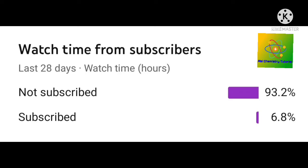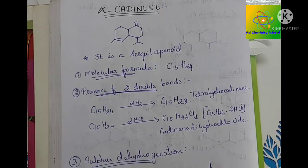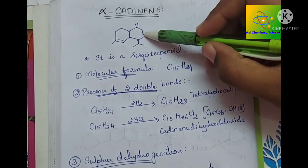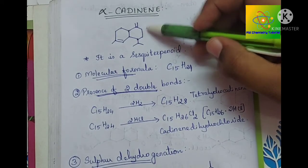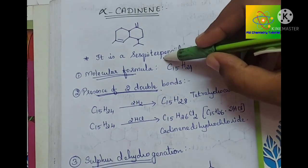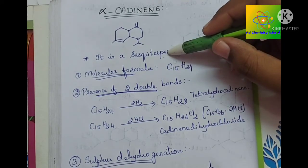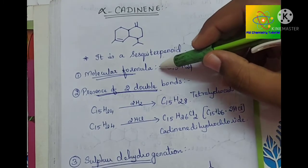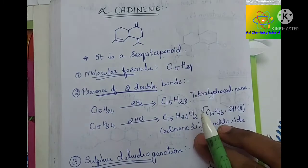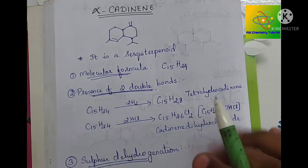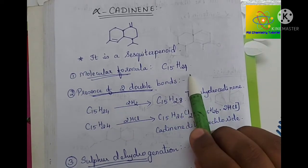Now let's get started. Alpha-cadinin — this is the structure of alpha-cadinin. It is a sesquiterpenoid, that is it has C15. The molecular formula is obtained by elemental analysis and molecular weight determination as C15H24.